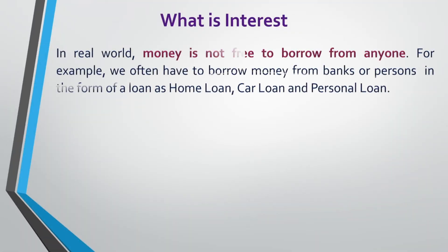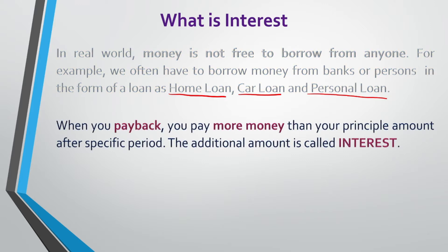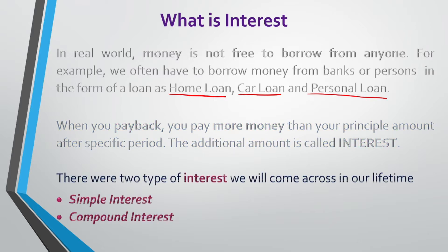What is interest? In the real world, money is not free to borrow from anyone. We often have to borrow money from banks or a person in the form of a loan — for example, a home loan, car loan, or a personal loan. But when you pay back, you pay more money than your principal amount after a specific period. That additional amount is called the interest. There are two types of interest: simple interest and compound interest. In today's video, we will be discussing only about simple interest.